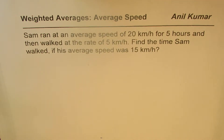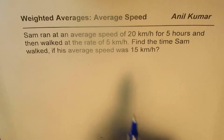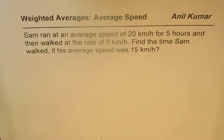I'm Alil Kumar and here is an example on weighted averages. We are considering average speed. Sam ran at an average speed of 20 kilometers per hour for 5 hours and then walked at the rate of 5 kilometers per hour. Find the time Sam walked if his average speed was 15 kilometers per hour.